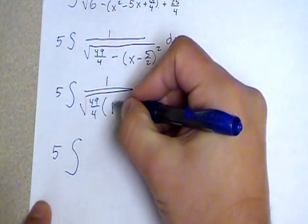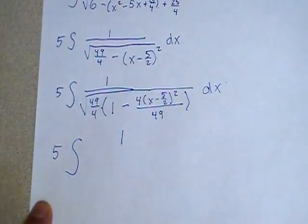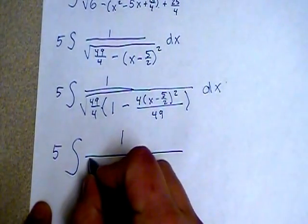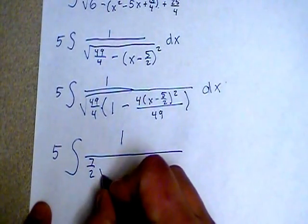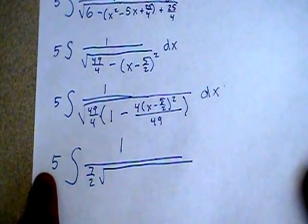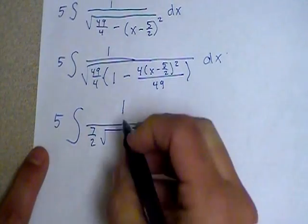I'm also going to, since this is a product now, I can go ahead and I can take the square root of 49 over 4. And the square root of 49 over 4 is going to end up being 7 over 2. So that will be outside the root. And then in the next line I'm actually going to bring it out here with the 5. So that's a constant now that's going to be able to come out here with the 5 and we'll take care of that on the next line.